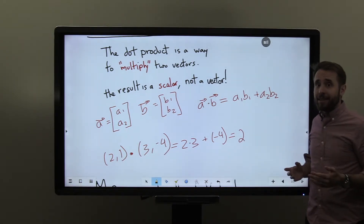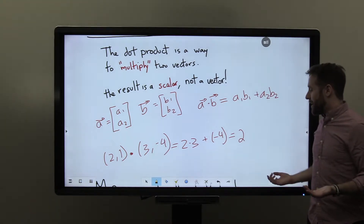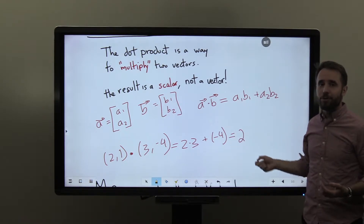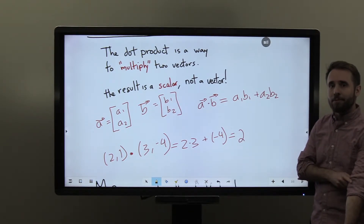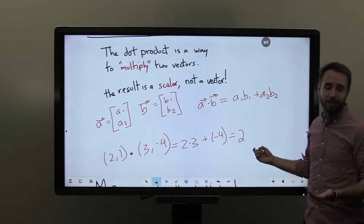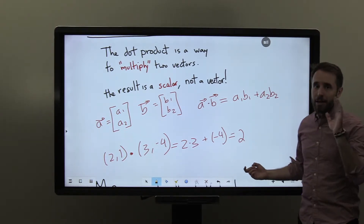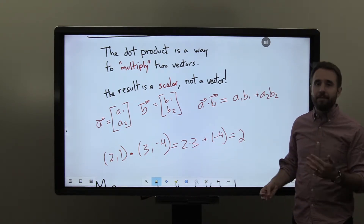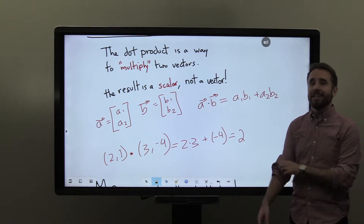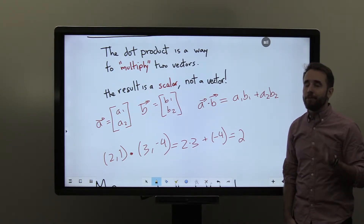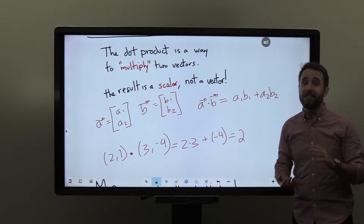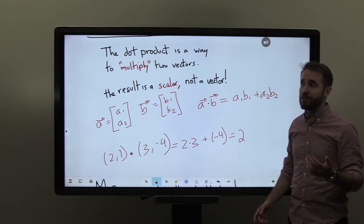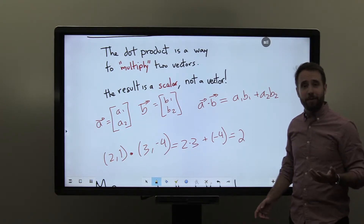Now it's absolutely worth asking: what is this telling us? We've taken this dot product and gotten the number 2 — what's the significance of that? The dot product does convey meaningful information. In particular, it can be used to convey very meaningful geometric information, just in a slightly roundabout way. So the dot product will be an important tool in our class going forward.